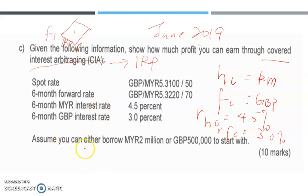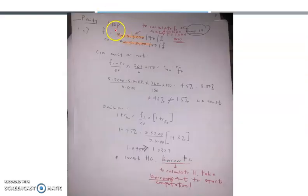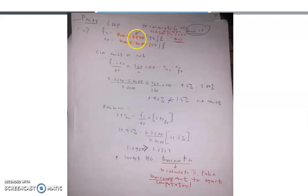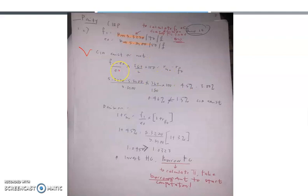Now they extend the question and need you to find how much profit there is through CIA. Since they want to proceed with covered interest arbitrage, you need to refer to interest rate parity. In the question, we have 5.3220 slash 5.3100 as the forward and spot rates. I need to prove CIA exists or not — this is step one. I insert all the formula: since F1 is 5.3220, I take the bid: F1 minus spot divided by spot, times 360 divided by 180 — why 180? Because this is a 6-month period — then times 100.